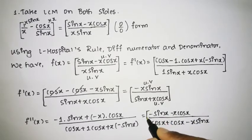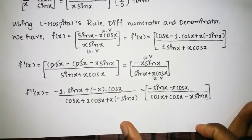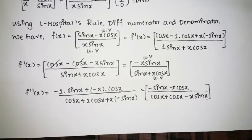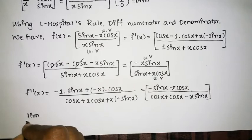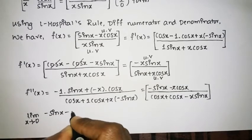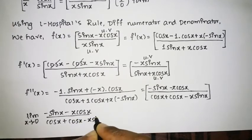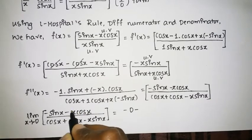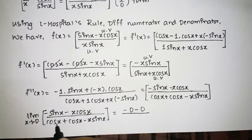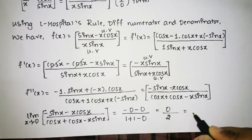Now we directly apply the limit as x tends to 0. The numerator becomes minus sin 0 minus 0·cos 0 = 0 minus 0 = 0. The denominator becomes cos 0 plus cos 0 minus 0·sin 0 = 1 plus 1 minus 0 = 2. So the result is 0 divided by 2, which is 0. Therefore 0 is the required result for the given limit.